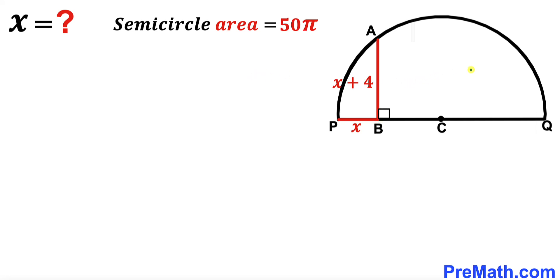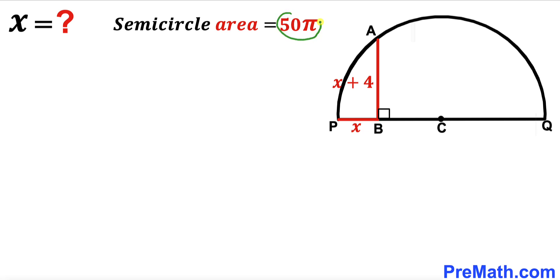Welcome to pre-math. In this video we have got a semicircle with center C, along with a perpendicular AB as shown in the diagram, such that perpendicular AB is x plus 4, whereas segment PB is x units. Moreover, the area of this semicircle has been given as 50π square units, and our task is to solve for x — in other words, to find the value of x.